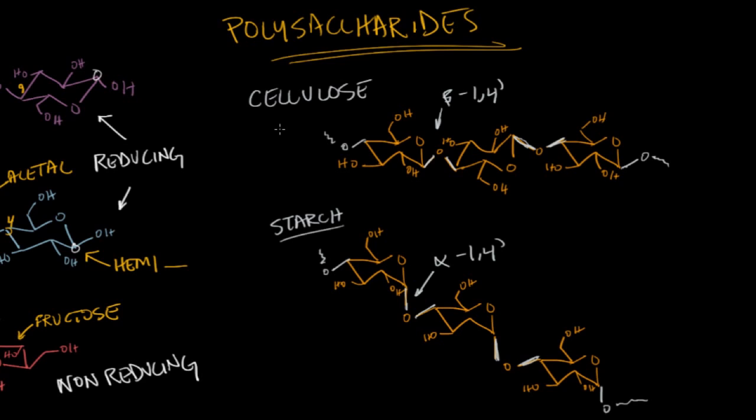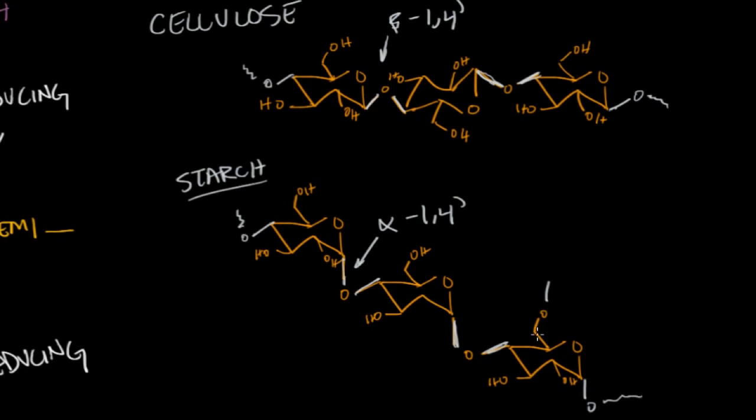One last polysaccharide I want to show you is very similar to starch. I'm going to use the starch as a basis here. But if you kind of branch off of the starch every once in a while on the C6 carbon, that's the C6 carbon right here, and you add on another glucose, this is another glucose. You can keep going with alpha 1,4 linkages again.